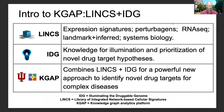NIH programs LINCS — Library of Integrated Network-based Cellular Signatures — and IDG — Illuminating the Drugable Genome — have generated rich open access datasets for the study of the molecular basis of human health and disease. LINCS expression signatures provide unbiased transcriptomic and genomic experimental evidence. IDG provides compiled and curated knowledge for illumination and prioritization of novel drug target hypotheses.